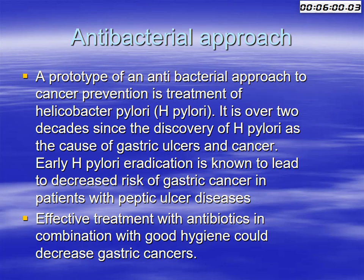The other approach is the antibacterial approach. A prototype of this approach to cancer prevention is the treatment of H. pylori. It is over two decades since the discovery of H. pylori as a cause of gastric cancer. Early H. pylori eradication is known to decrease the risk of gastric cancer in patients with peptic ulcer disease, and effective treatment with antibiotics in combination with good hygiene could decrease the incidence of gastric cancer.